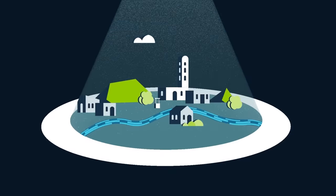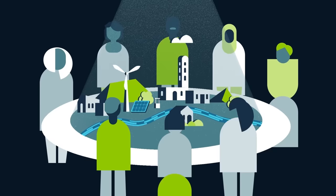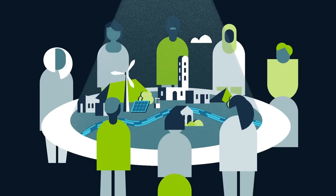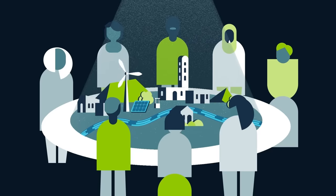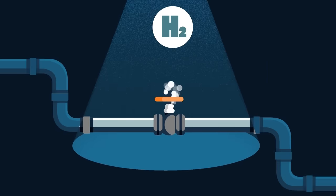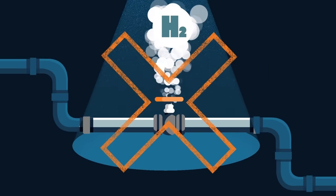For all installations, good spatial planning and independent participatory impact assessments are key to avoid land use conflicts and ecosystem degradation. As green hydrogen is also a greenhouse gas, it is crucial to avoid any leaking of hydrogen.